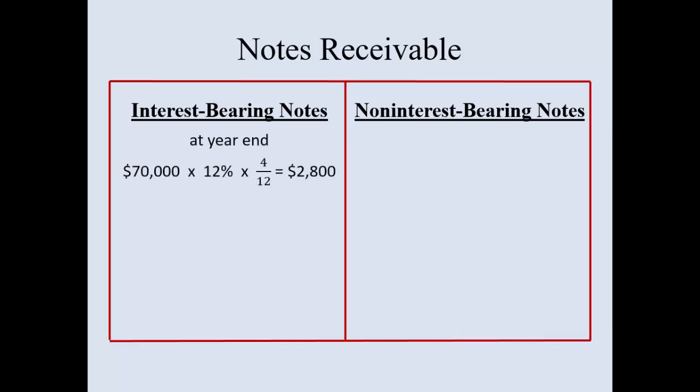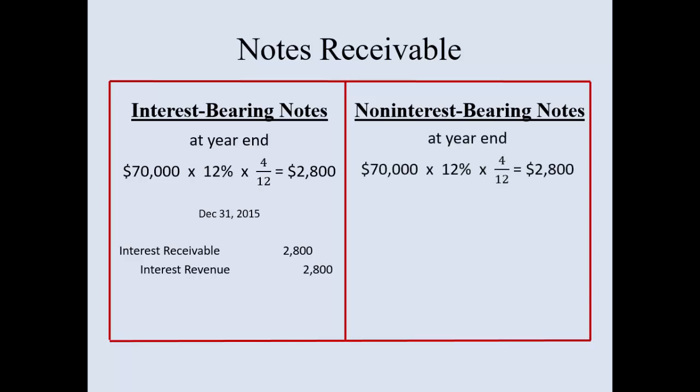At the end of the year, you would have to do an accrual entry to record revenue. Four of the six months have gone by, so you have rightfully earned revenue. For a non-interest bearing note, notice it's the same math, but instead of debiting Interest Receivable, you're removing some of the Discount on Notes Receivable you recorded earlier. Interest Revenue is the same.